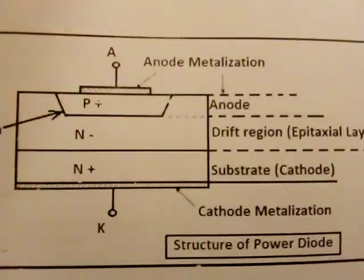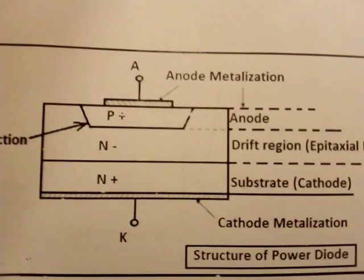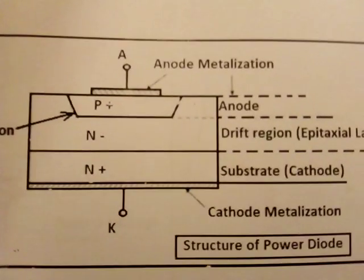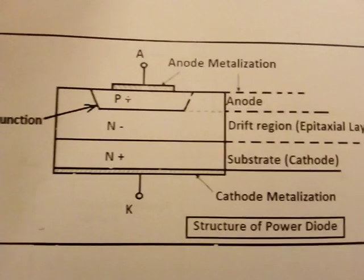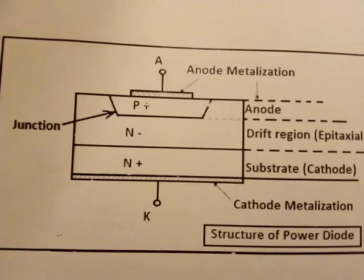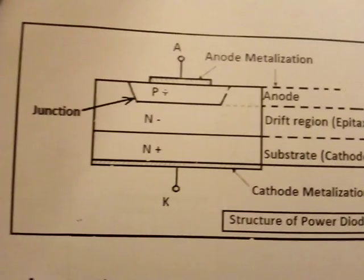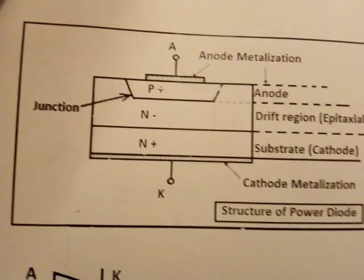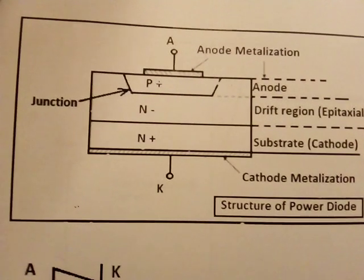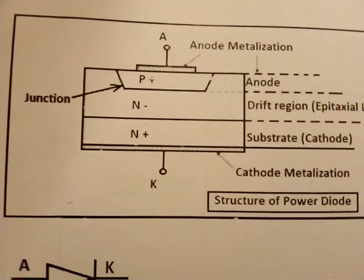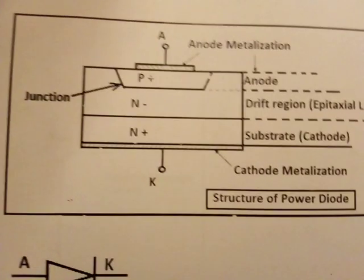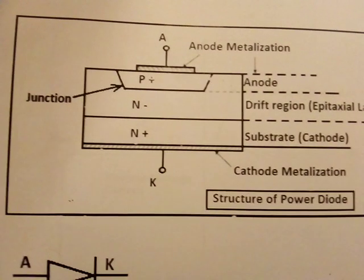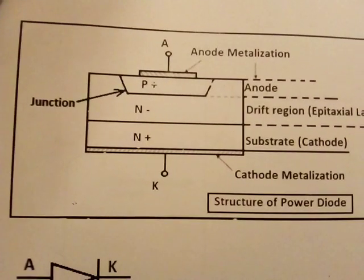which increases the required breakdown voltage in the reverse condition. For high power, high voltage applications, we need high current while conducting for a diode and high voltage to withstand in reverse biased state.